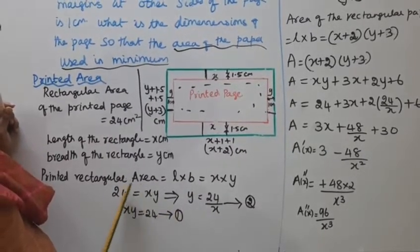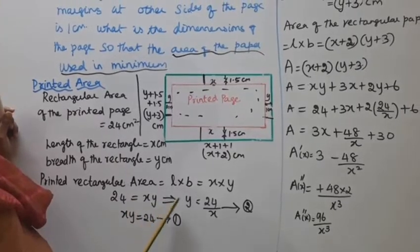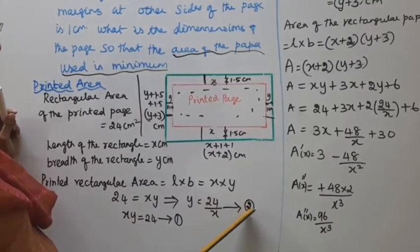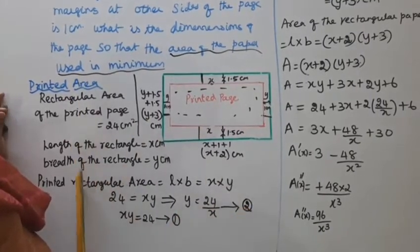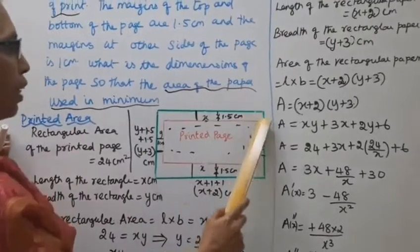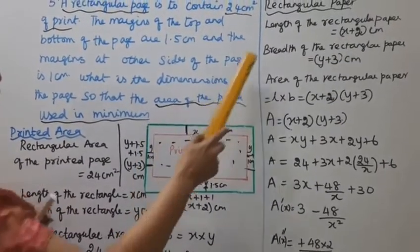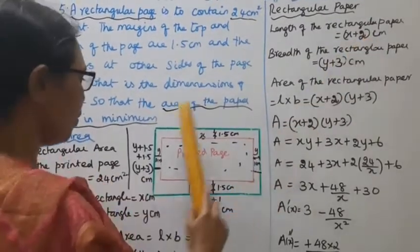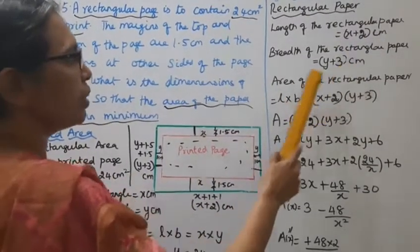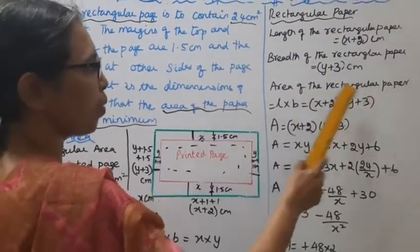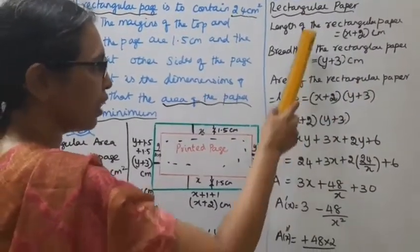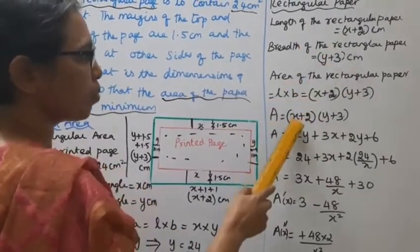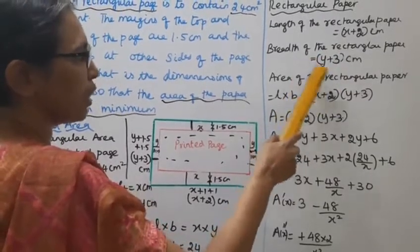From equation 1, x times y equals 24, so y equals 24 divided by x — this is equation 2. The area of the rectangular paper is L into B, where L is x plus 2 and breadth is y plus 3.